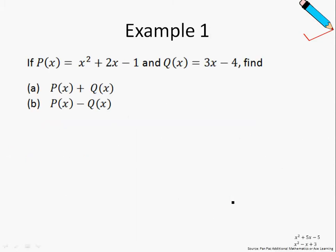So without further ado, let's go straight to example number 1. If px equals x squared plus 2x minus 1 and qx equals 3x minus 4, find px plus qx. So this is a really nice and simple example to start with. px plus qx is just px, which is x squared plus 2x minus 1, plus qx, which is 3x minus 4. And simplifying this, I'll just have x squared plus 5x minus 5. That's it for example 1a.